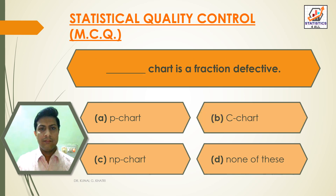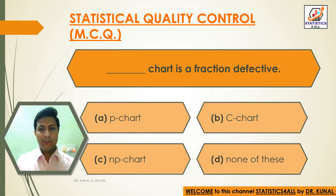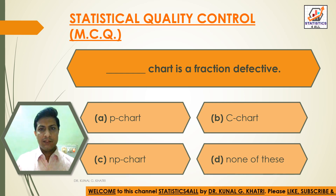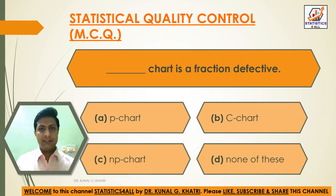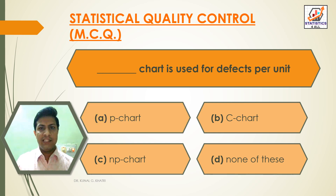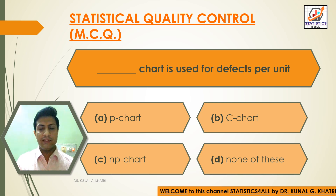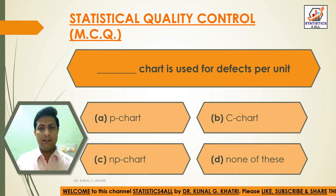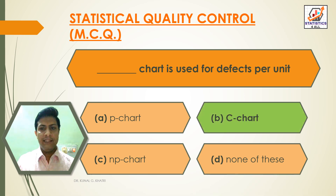Next question: which chart is a fraction defective chart? Option A: P chart, Option B: C chart, Option C: NP chart, Option D: none of these. Answer: Option B — C chart is used for defects per unit.